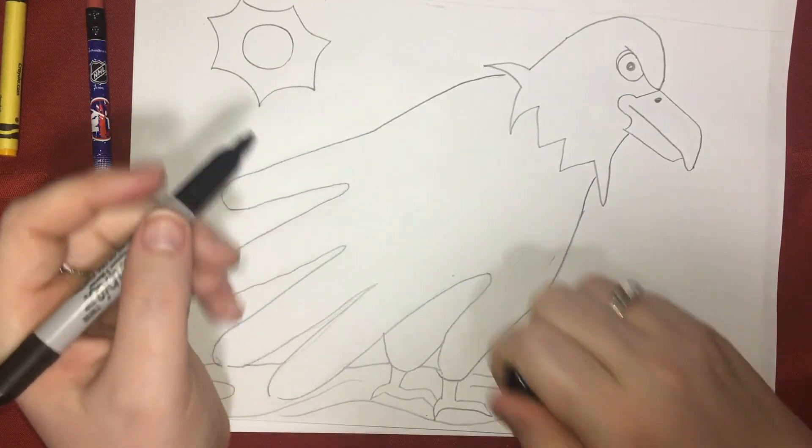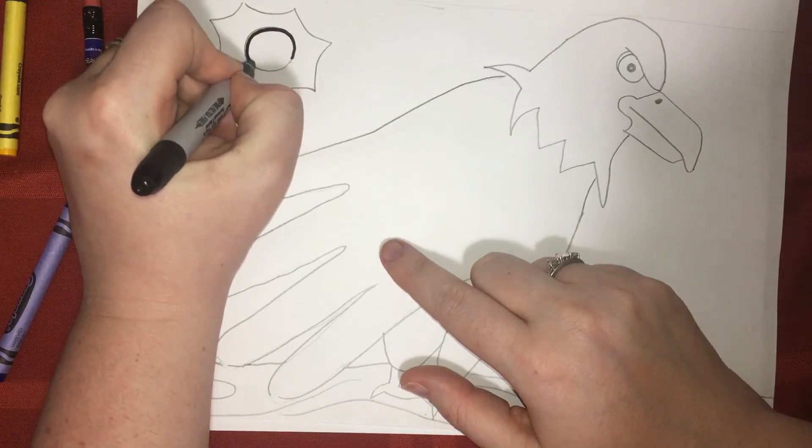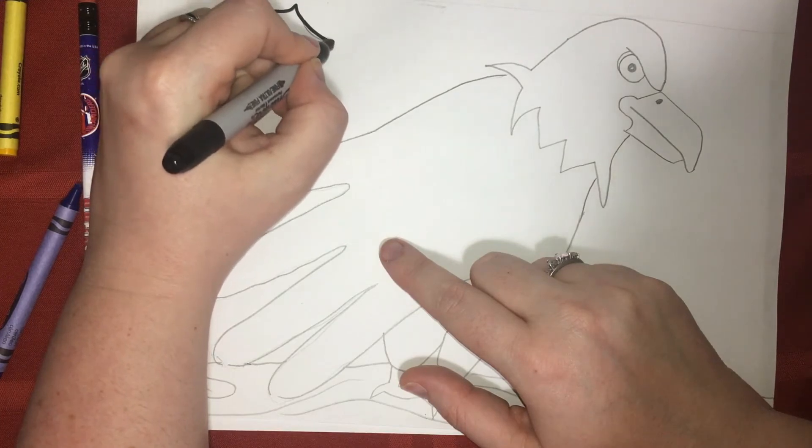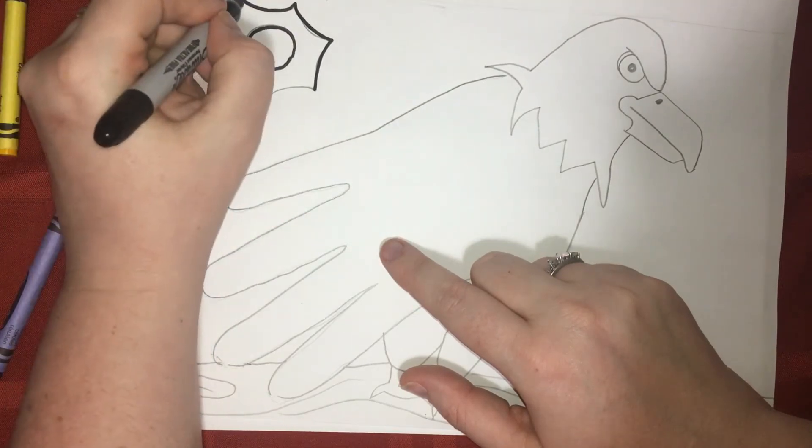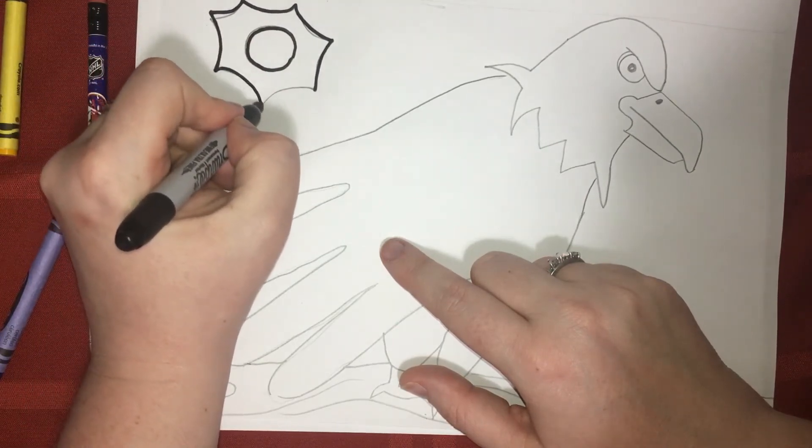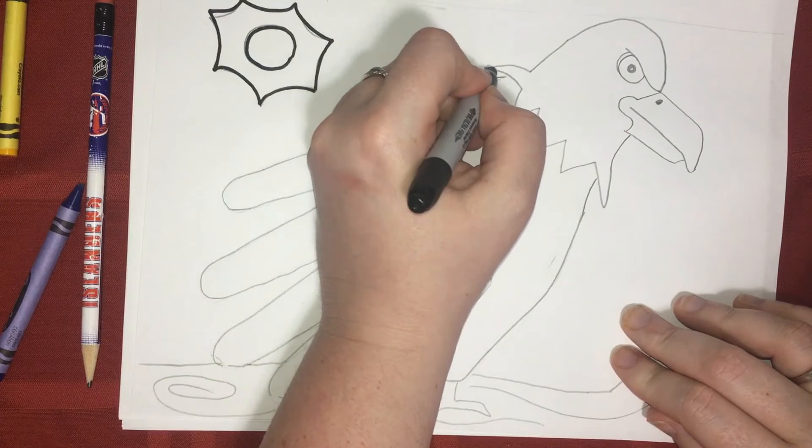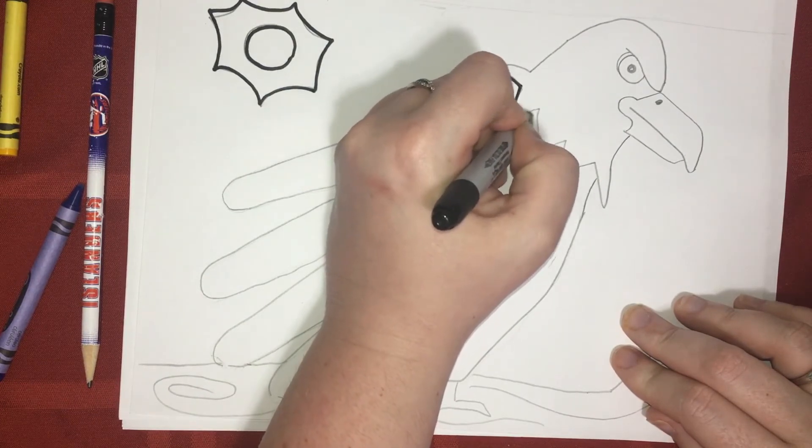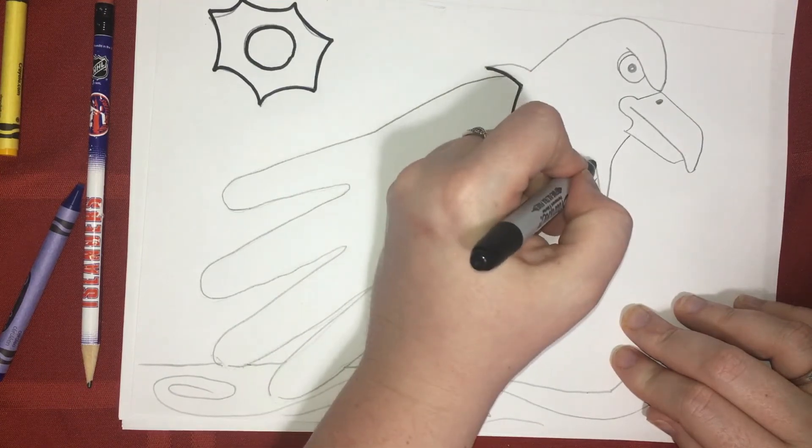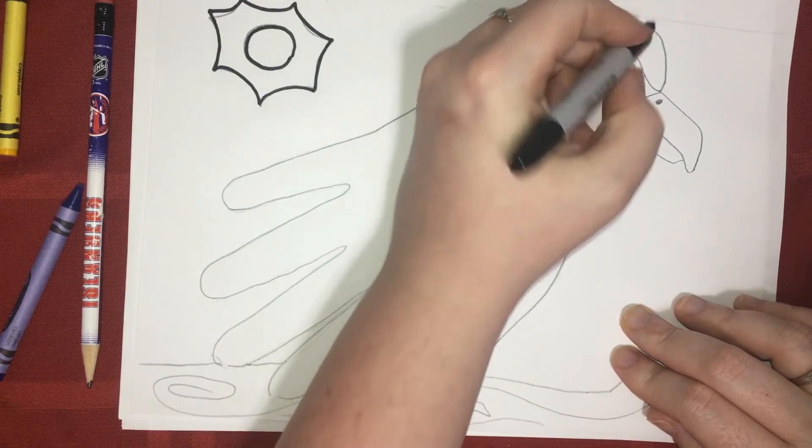All right, I grabbed my Sharpie. What do you think I'm doing next? You're right. I'm going to trace over all of my pencil lines. Remember, you don't need a Sharpie to do this. There are other materials we can use and I can show you those at the end of this video. Notice, I'm going very slowly as I trace over all of my lines. I don't want to make any mistakes with this Sharpie because I won't be able to erase them.